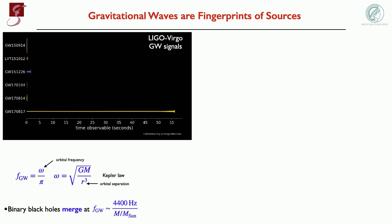At some point the two objects merge, at a frequency given by a formula where M is the total mass of the binary in solar masses. Because a binary neutron star has small masses, the merger frequency is in the kilohertz — that's why the neutron star signal is very long. Black holes have larger mass and merge around a few hundred hertz, so their signals are shorter. If you continue to increase the black hole mass, at some point they merge outside the detector bandwidth, and we have to go to space, as I'll describe in a moment.